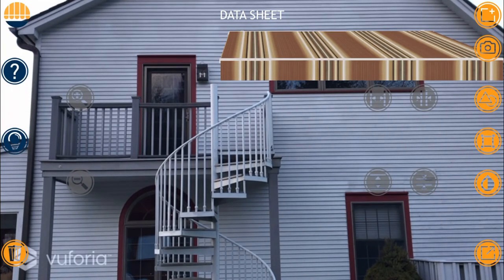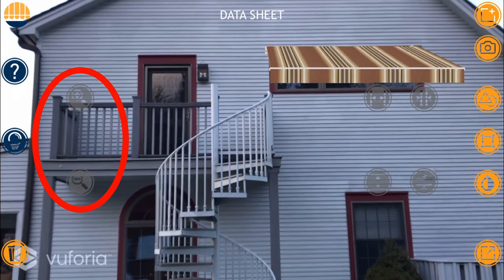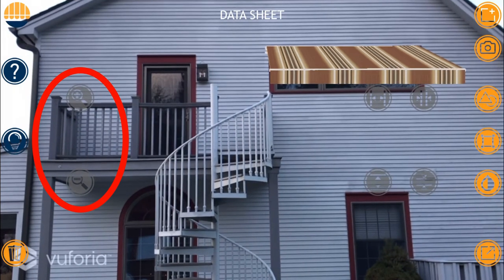Once I select the pattern, I can now adjust the scale of the fabric pattern, if necessary, by using the gray magnifying icons. This is an important feature, because depending on how close we are to the structure, we may need to adjust the stripe size to accurately represent the repeat size of the fabric pattern. We'll shrink the stripes down just a bit here.